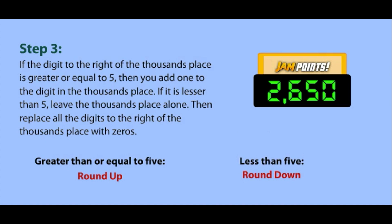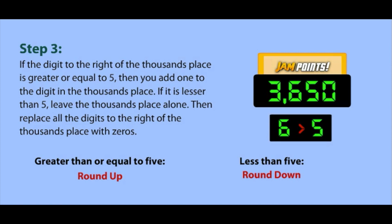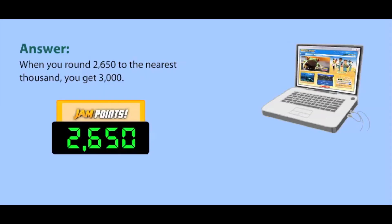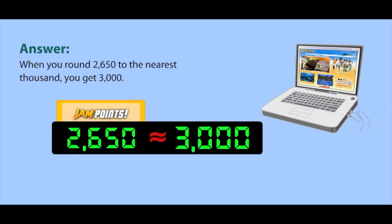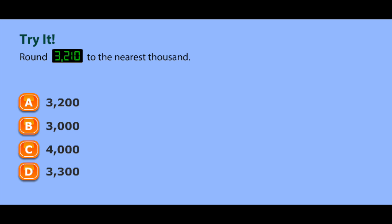Either way, you replace all the digits to the right of the thousands place with zeros. Since 6 is greater than 5, we need to add 1 to the digit in the thousands place of our number. Replace all the rest of the digits with zeros — that makes 3,000. When you round 2,650 to the nearest thousand, you get 3,000. Now Zoe can estimate with ease. Test your skills by rounding this number to the nearest thousand.